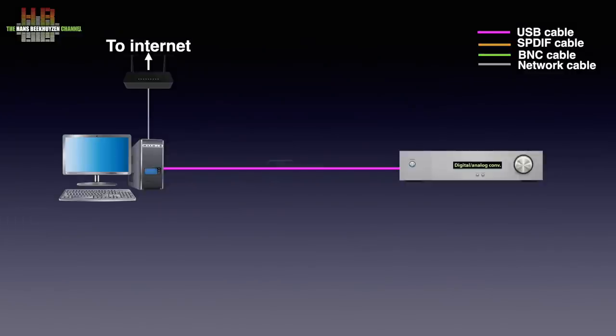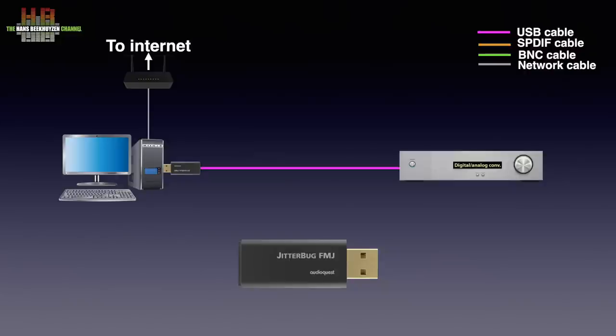A simple solution that might bring some improvement is the use of an AudioQuest Jitterbug — a USB plug with a USB socket on the other side, with passive filters in between that reduce interference coming from the sending device. It currently costs 69 euros including VAT, and I heard it work in a number of instances as described in my review from 2016. AudioQuest is not the only supplier of this kind of filter, but it is the only one I have tried.